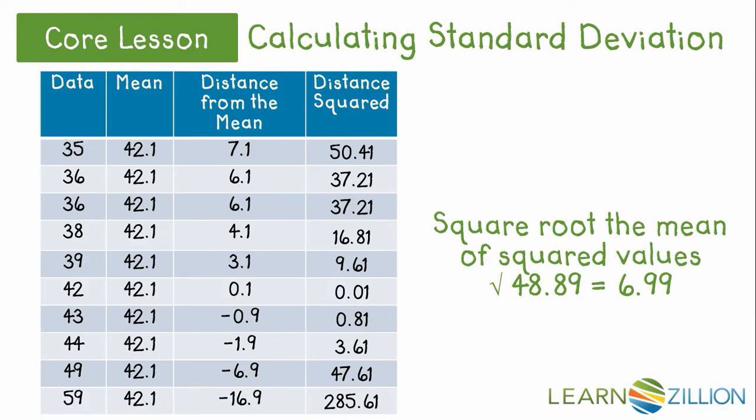Why square root the mean? Well remember, we are determining a measure of spread. Our units of measure are tons. When we square the distances from the mean, we get tons squared, which makes no sense when analyzing data.